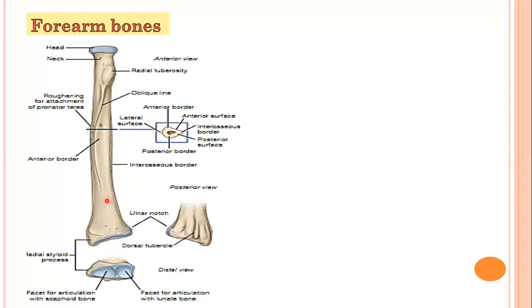In the shaft, one important thing is that the lateral bone, which is the radius — the middle border of the radius is very prominent and sharp. We call it the interosseous border. The interosseous border gives attachment to the interosseous membrane.